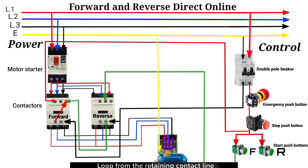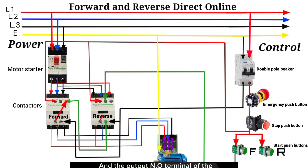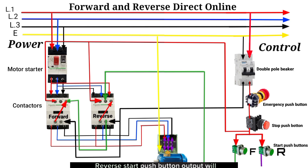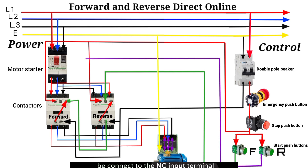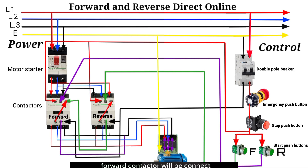Loop from the retaining contact line source and connect it to the NO input terminal of the reverse contactor, and the NO output terminal of the reverse contactor to A1 of the reverse contactor. The reverse start push button output connects to the NC input terminal of the forward contactor, and the NC output terminal of the forward contactor connects to the A1 terminal of the reverse contactor.